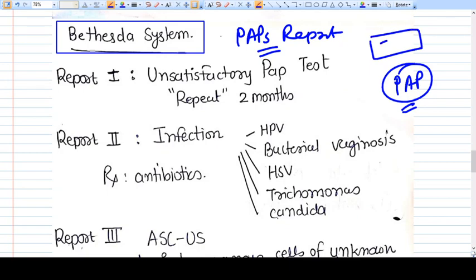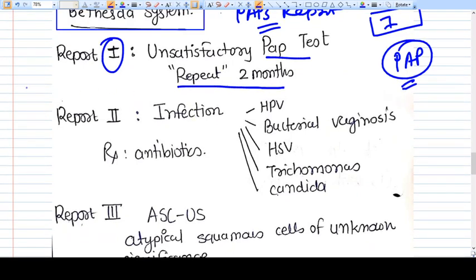There are only seven reports you can generate. Report number one is unsatisfactory Pap smear. What we do is repeat the Pap smear within two months.